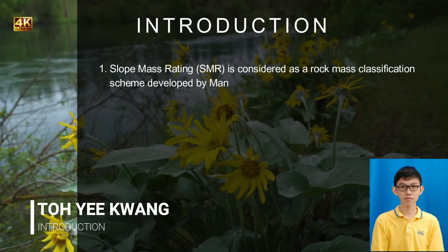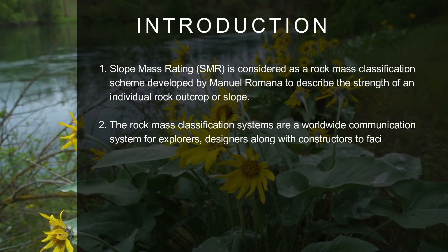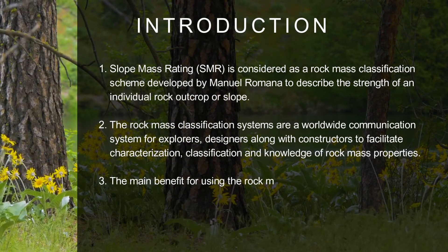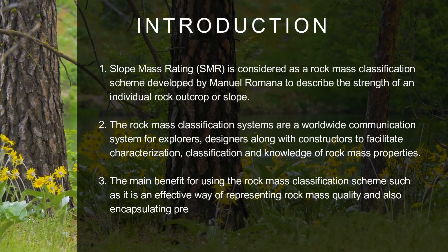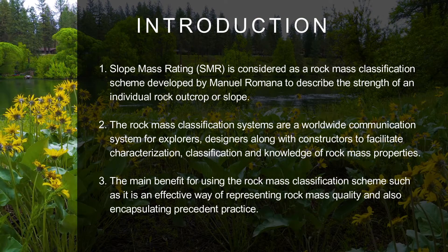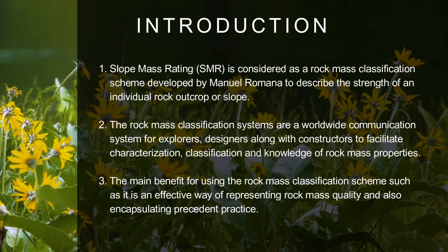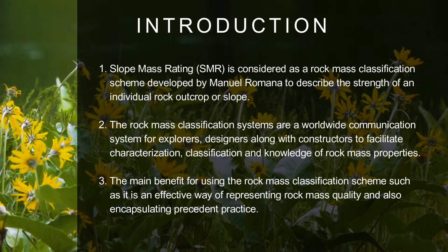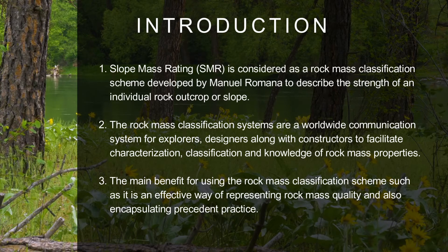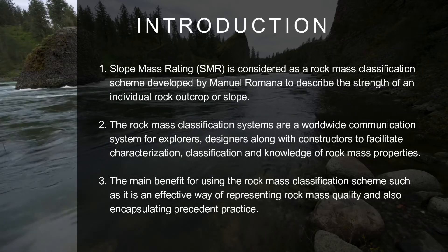For the introduction, Slope Mass Rating (SMR) is considered a rock mass classification system developed by Manuel Romana to describe the strength of an individual rock outcrop or slope. Rock mass classification systems are a worldwide communication system for explorers, designers, and constructors to facilitate characterization, classification, and knowledge of rock mass properties. The main benefit of using the rock mass classification system is that it is an effective way of representing rock mass quality.